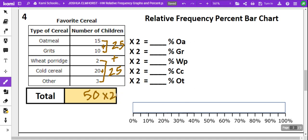So we multiply each one of these by 2 to give us percent. We got 30%. 10 times 2 is 20, 2 times 2 is 4, 20 times 2 is 40, and 3 times 2 is 6.